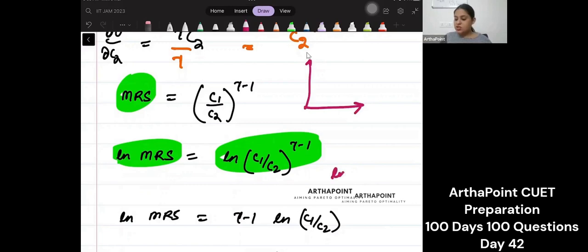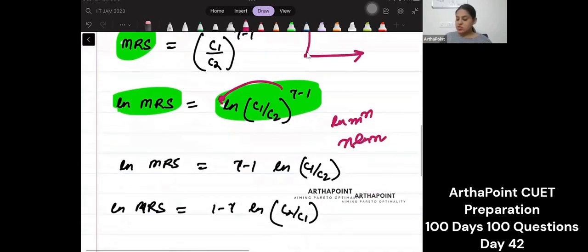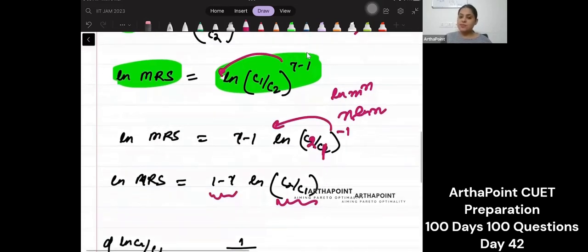So first of all, I just used LN M to the N is N LN M. I brought this out. And then I just reciprocated it. That means is ki power minus 1 karke make this as C2 by C1. So minus 1 also comes out. And this will be 1 minus your factor.